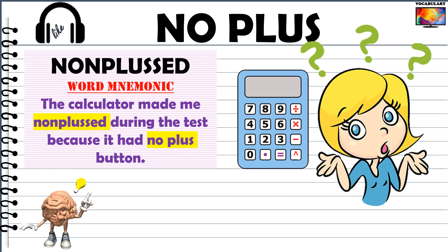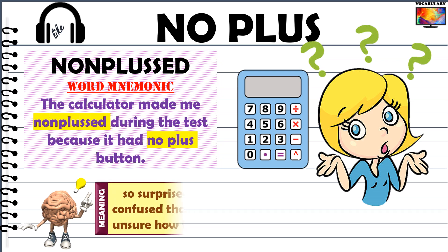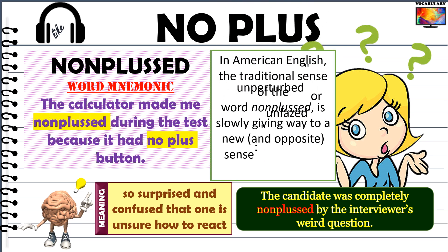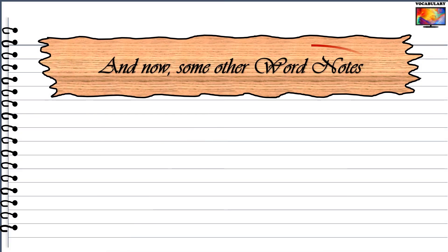I was totally surprised and confused and unsure about what to do. Nonplussed means so surprised and confused that one is unsure how to react. This word can also be used as a verb in the same meaning. An example sentence: the candidate was completely nonplussed by the interviewer's weird question during his job interview. One interesting point — there is no word plussed; you can only be nonplussed. Another important point is that this word seems to be changing meaning in contemporary English, particularly American English. The traditional sense — bewildered and at a loss as to what to think — is slowly giving way to a new and opposite sense: unfazed or unperturbed.